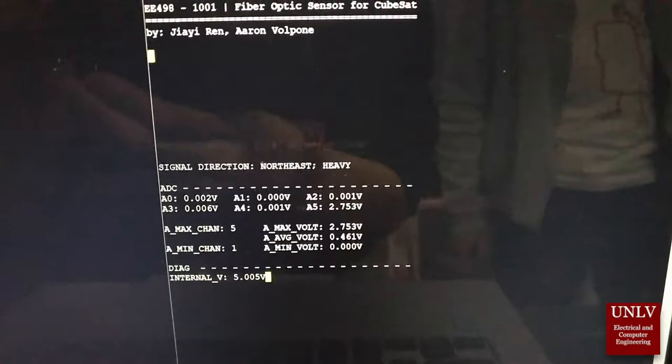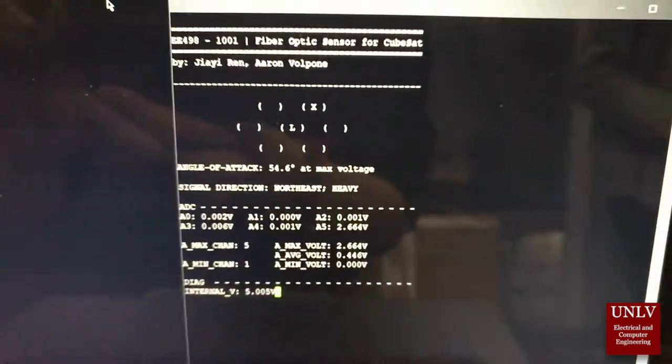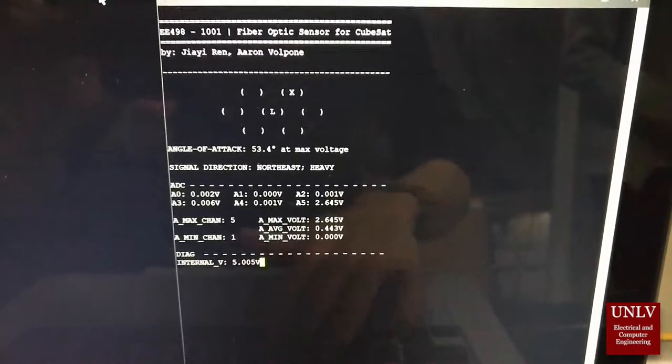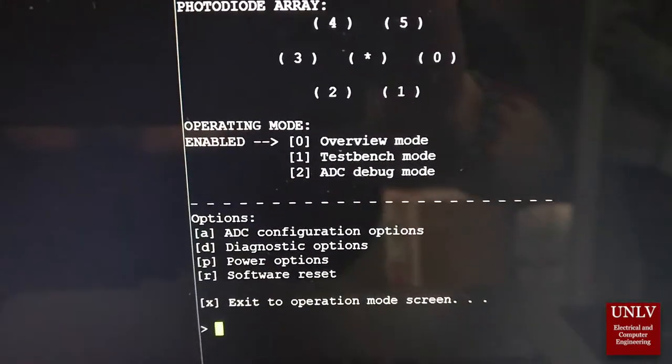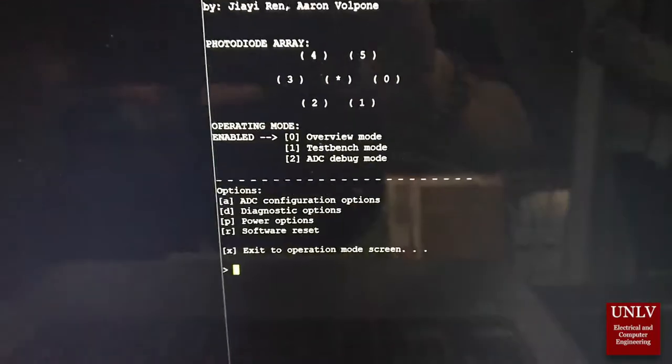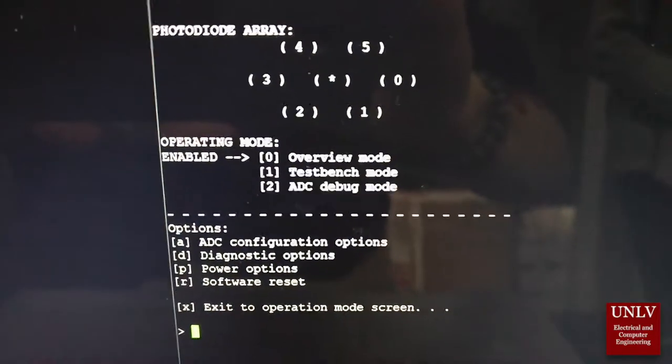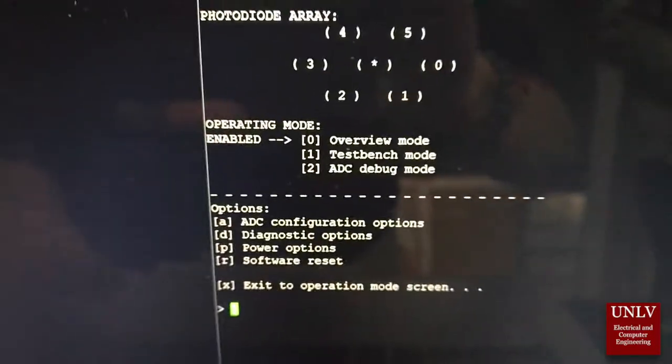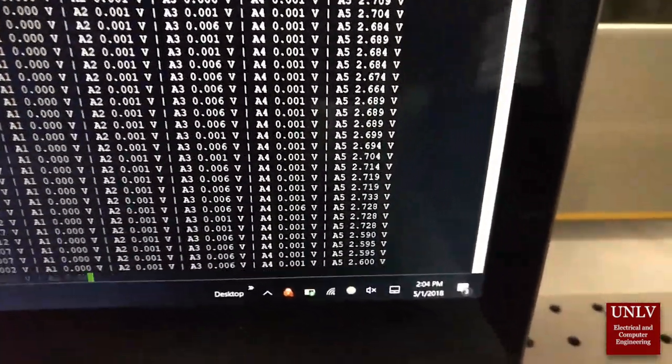Here is the software we came up with. There are three modes and four options that you can choose from. The overview mode will tell the real-time data. The test bank mode will show the degree and photodiode that are currently in use. Here is how the overview mode looks like.